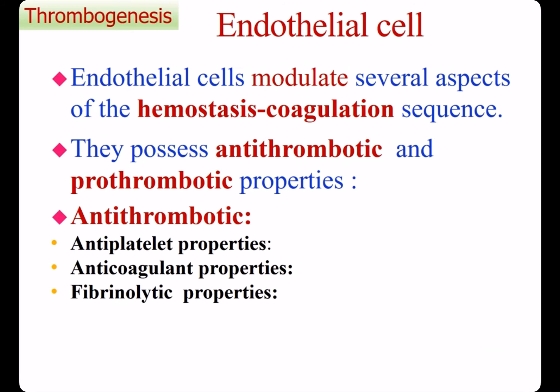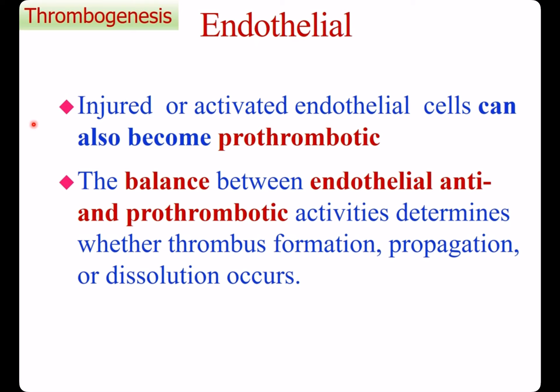Endothelial cells possess antithrombotic and prothrombotic properties. Antithrombotic properties include antiplatelet properties, anticoagulant properties, and fibrinolytic properties. Antiplatelet properties include blocking platelet activation, adhesion, and aggregation. Injured or activated endothelial cells can also become prothrombotic. The balance between endothelial antithrombotic and prothrombotic activities determines whether thrombus formation, propagation, or dissolution occurs.